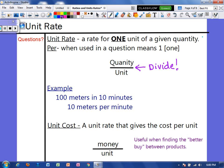So let me explain what I mean when I say it's for one unit. So if someone told us that they ran 100 meters in 10 minutes, this would be the rate. But if we wanted to know how far they run in one minute, that would be the unit rate.